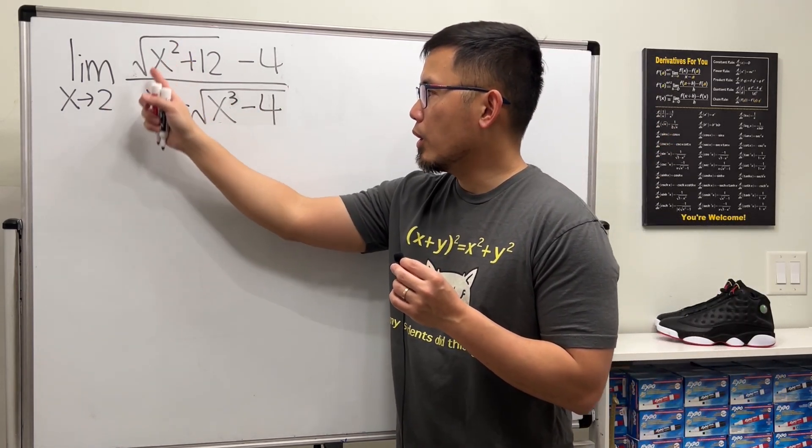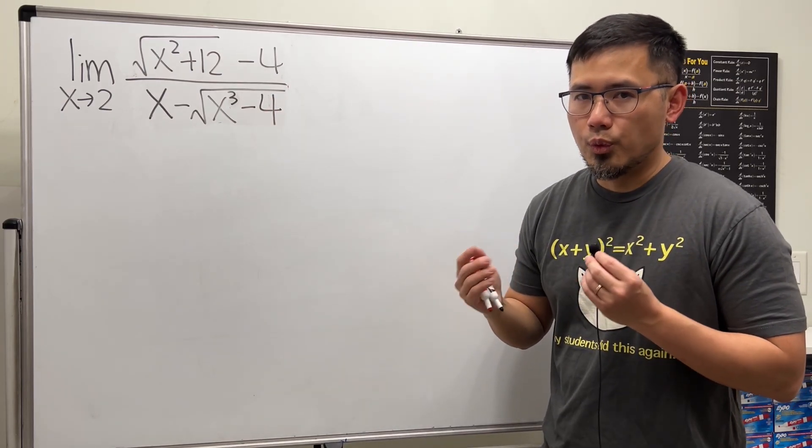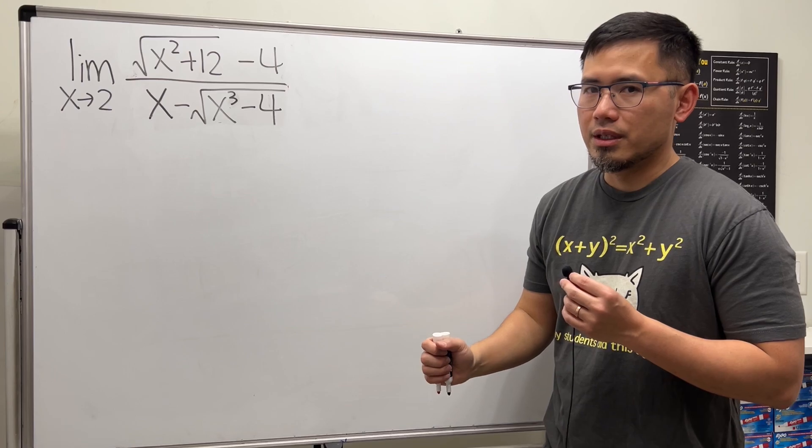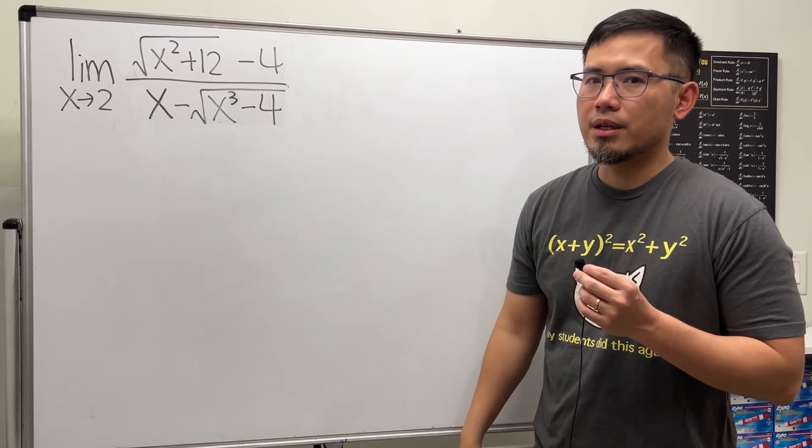Here's the deal. If we plug in 2 into all the x's, we will get 0 over 0, so we have to do more work in order to figure out the limit. But not L'Hopital's rule, because I believe this is meant to be done algebraically.